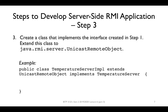In the third step, we need to create a class that implements the interface we created previously. This class also needs to extend UnicastRemoteObject, which is a class from the java.rmi.server package. For example, here we have a class named TemperatureServerImpl that extends UnicastRemoteObject and implements TemperatureServer.